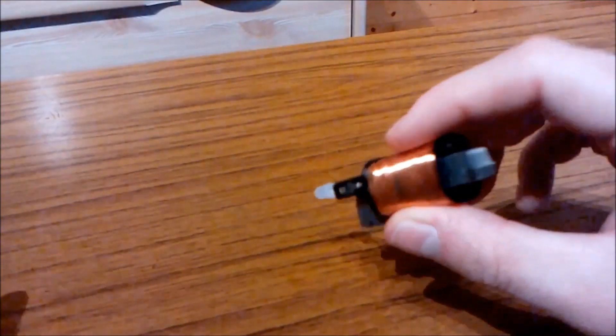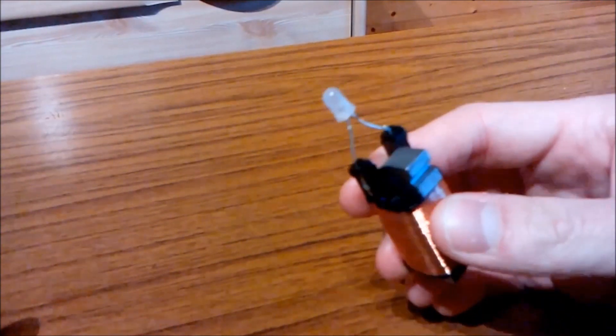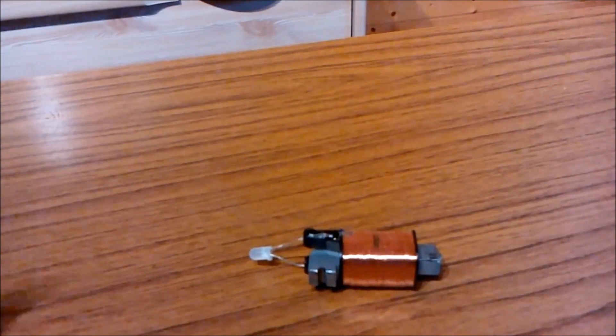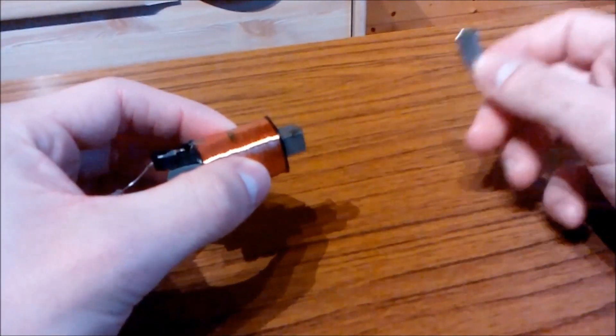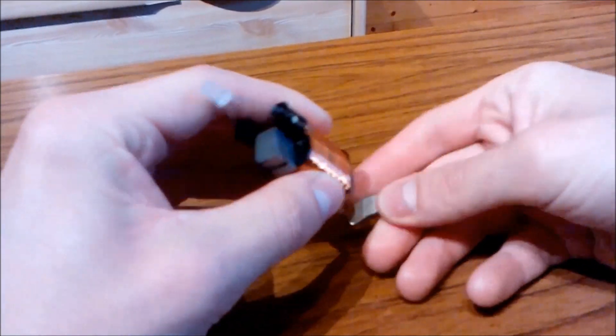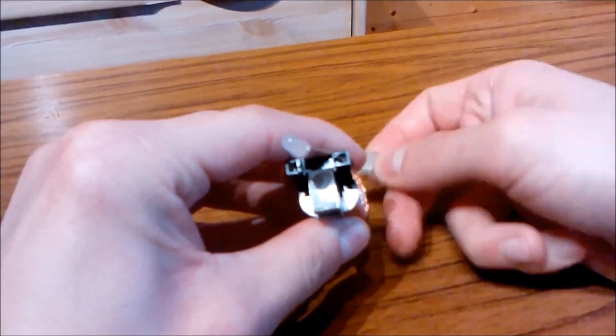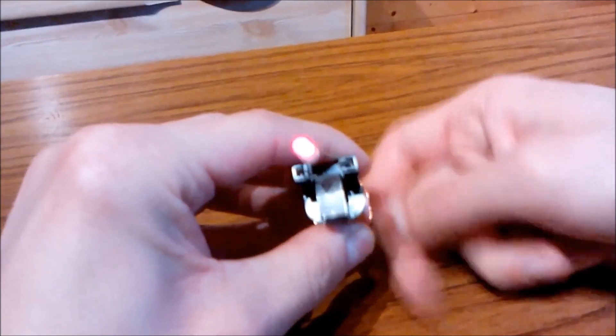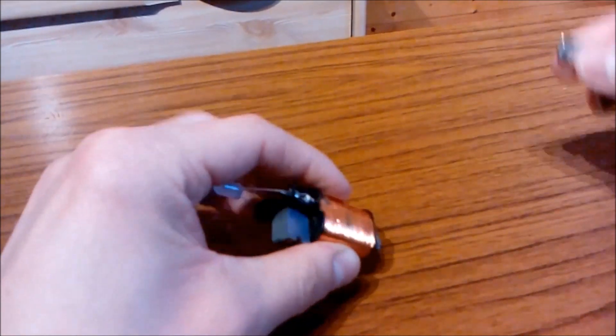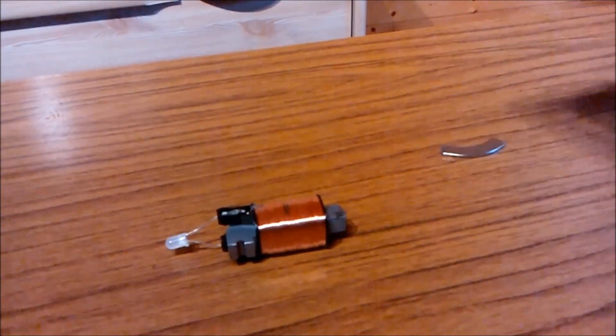Here I have a coil with an iron core. At the ends of the coil, I attach this LED. If I now take a magnet, which resembles the magnetic charge in the tape, and move it past the core, you can see the LED lighting up. The magnetic charge is converted to an electrical signal.